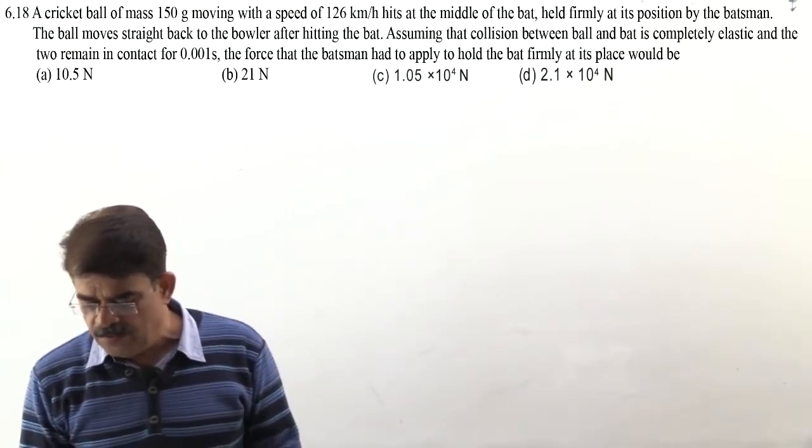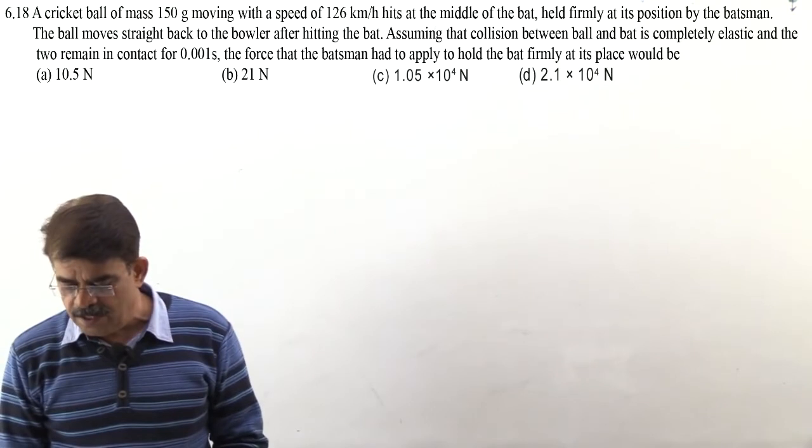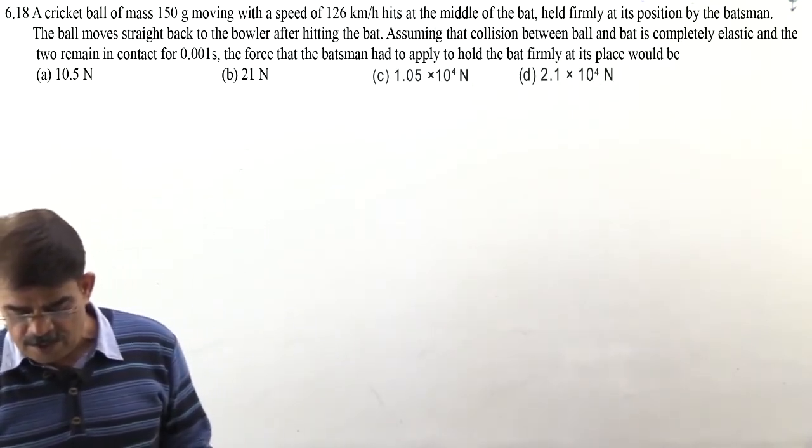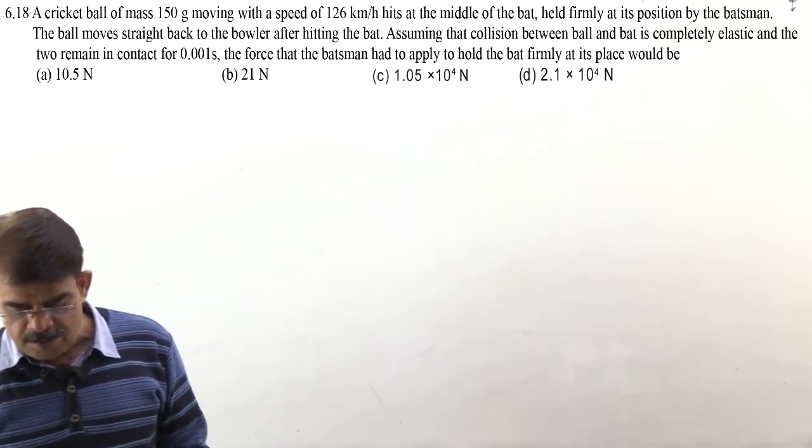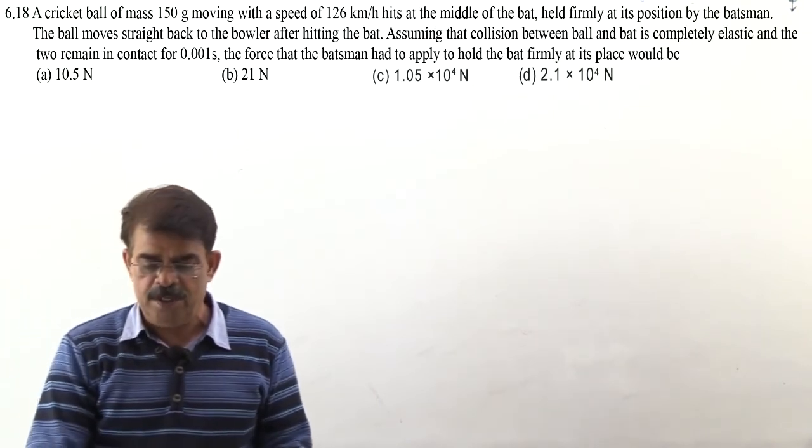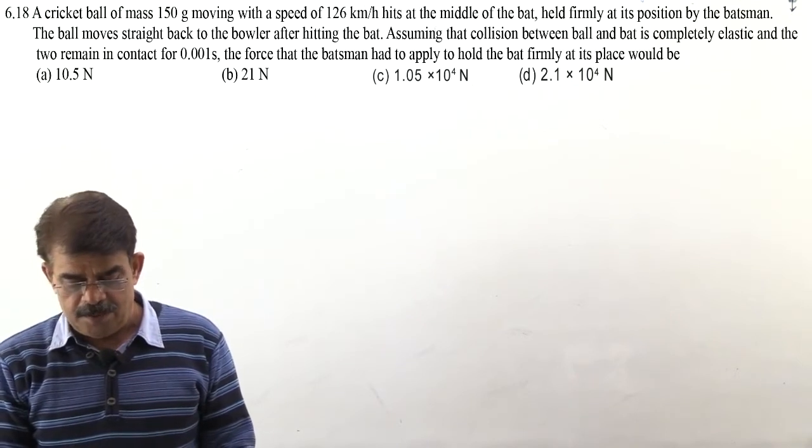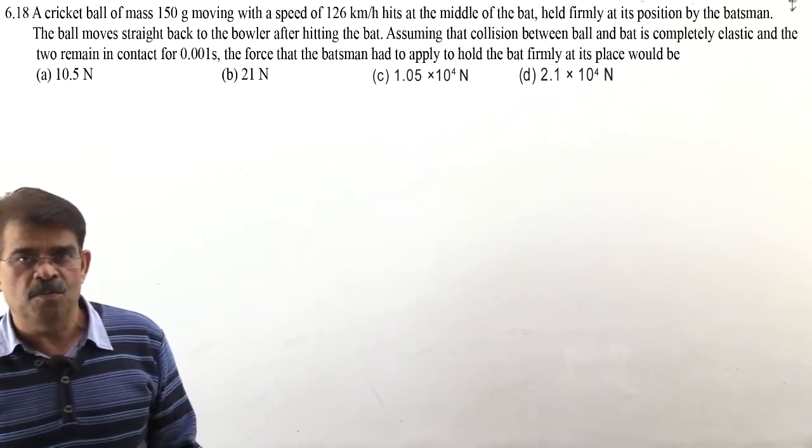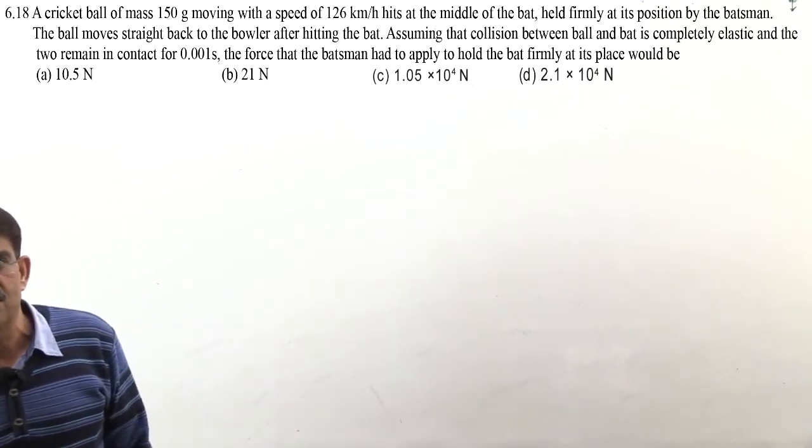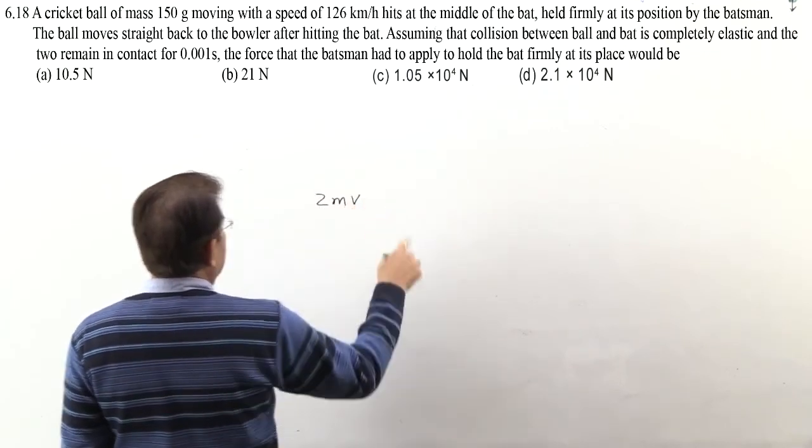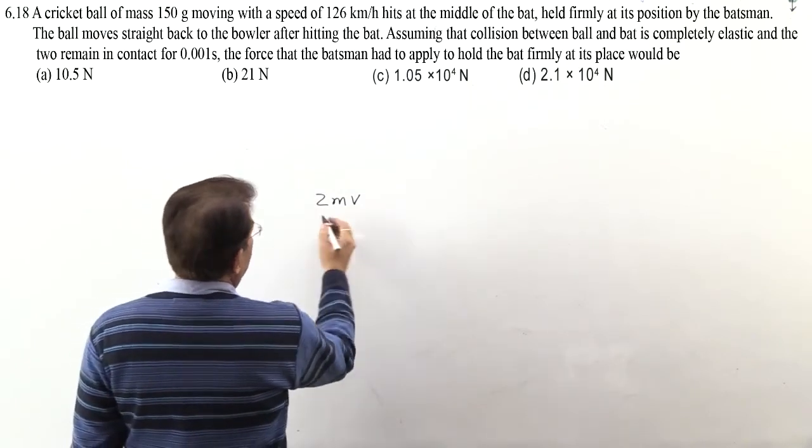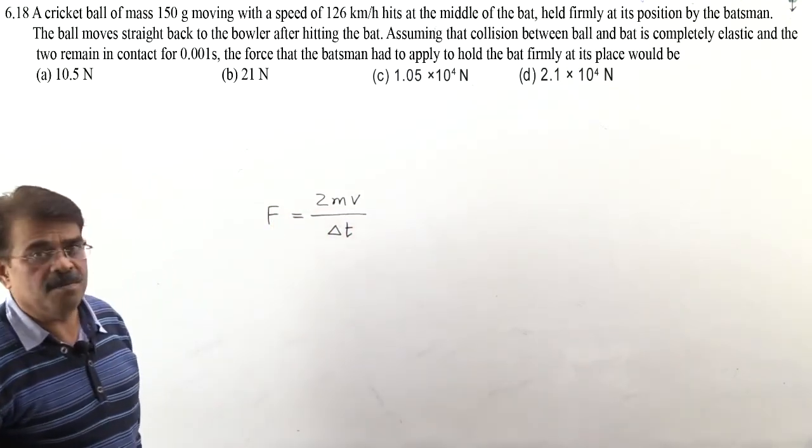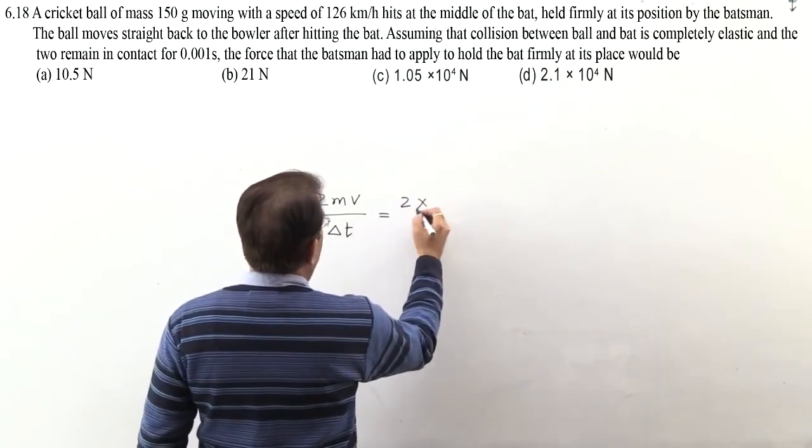Next problem 6.18: A cricket ball of mass 150 gram moving with speed of 126 km per hour hits at the middle of bat held firmly at its position by batsman. The ball moves straight back to bowler after hitting bat. Assuming collision between ball and bat is completely elastic and the two remain in contact for 0.001 second, the force that batsman had to apply to hold bat firmly at its place would be. So because elastic collision, it means ball's velocity after collision with bat will be same velocity, will be same velocity. So change in momentum, 2mv will be the momentum imparted to bat, will be 2mv.